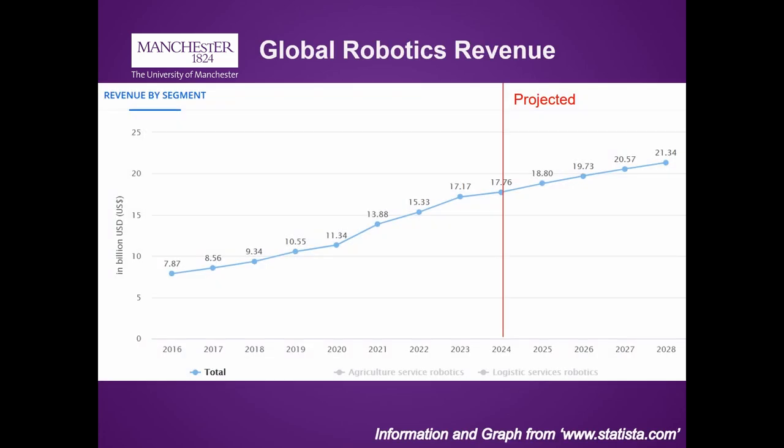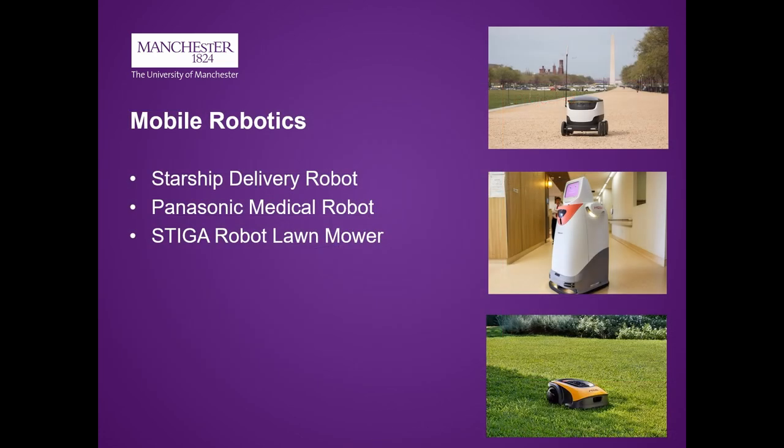With the expansion of the global robotics market, mobile robots are becoming more common in day-to-day industries. Starship Delivery Drones, Panasonic Medical Robot and Steger Autonomous Lawnmower are examples of wheeled mobile robotics currently on the market.